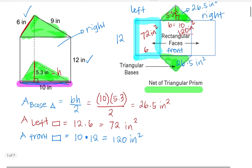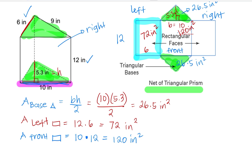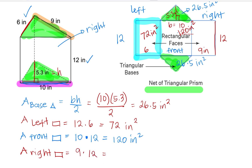We have one more to do, and that is the right side. The right side has a height of 12, and the width is 9 inches — we label this side as 9 inches. To find the area of the right side, we multiply 9 times 12, which equals 108 inches squared.